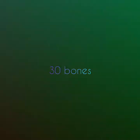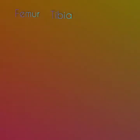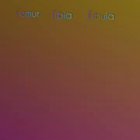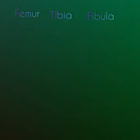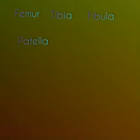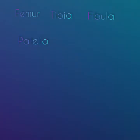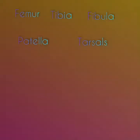Each leg is made up of 30 bones. The femur is the large bone of the upper leg. The tibia is the main bone of the lower leg and forms the shin. The fibula is the second bone in the lower leg, found on the outer leg. The patella can also be called the kneecap. The tarsals are the seven bones that make up the ankle.